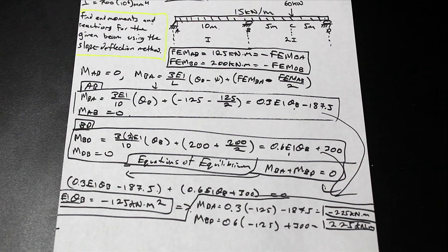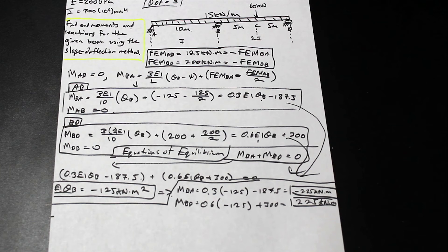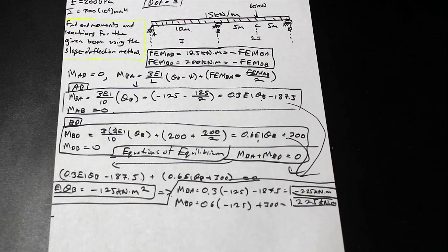We've found M_ba and M_bd. In the next video we're going to solve the member end forces and end moments, and do an equilibrium check to make sure our values are correct. Thank you for watching this second part of the video.